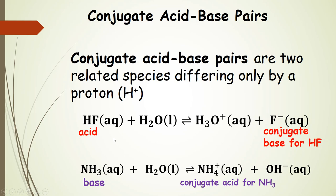To summarize: an acid always has a conjugate base on the product side, and it's going to be whatever the acid is without the H+, whatever's left over. When we look at bases, we have the base with an extra H+ added on the product side, and that's the conjugate acid.